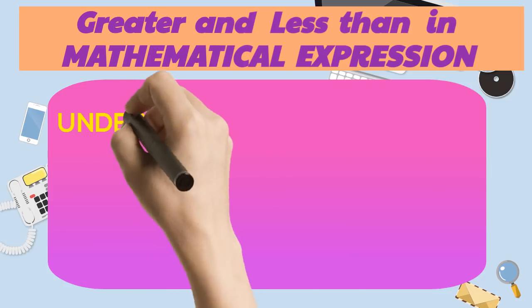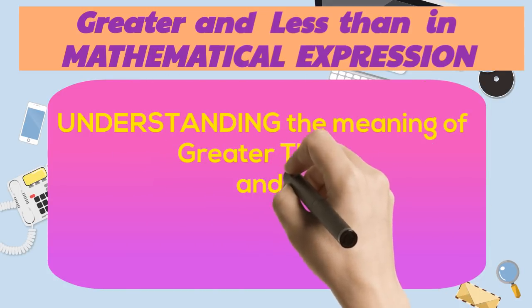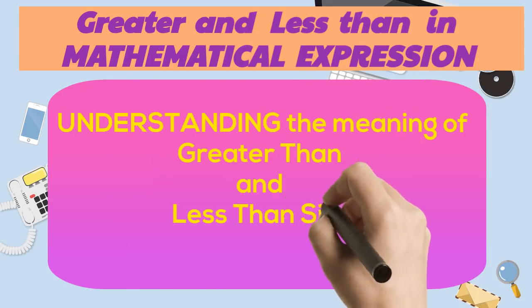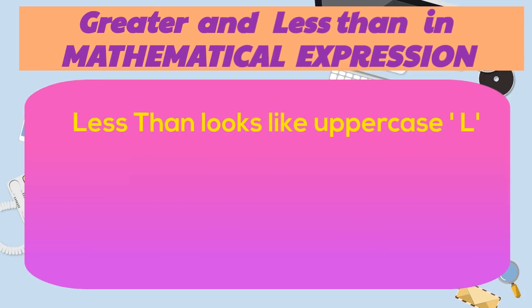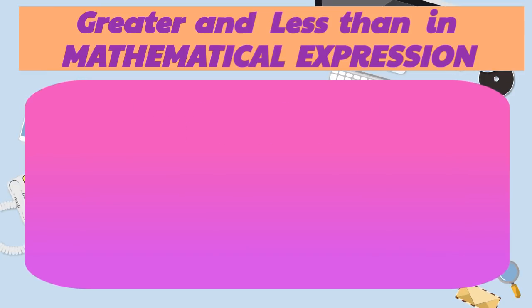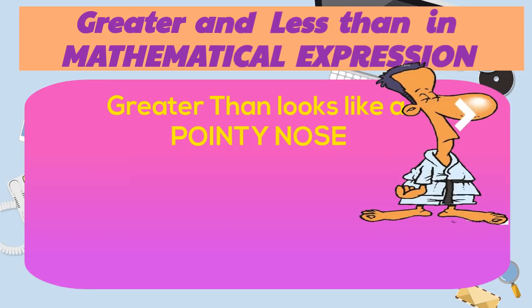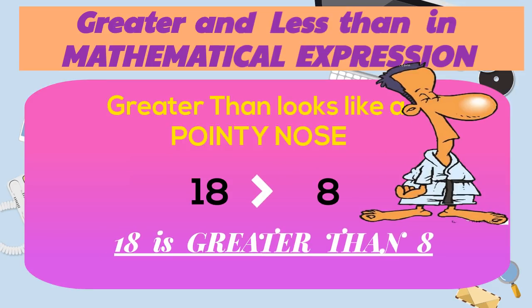To make kids understand the meaning of these symbols, we need to go one step further. Try to teach kids that the lesser than sign looks like an uppercase L — so this sentence reads: 8 is lesser than 18. For the greater than sign, teach kids that this symbol looks like a pointy moose, so this sentence reads: 18 is greater than 8.